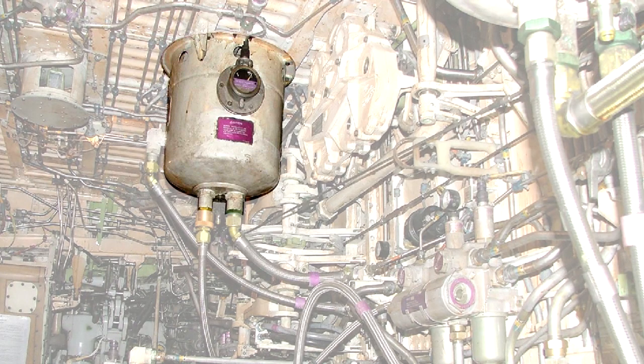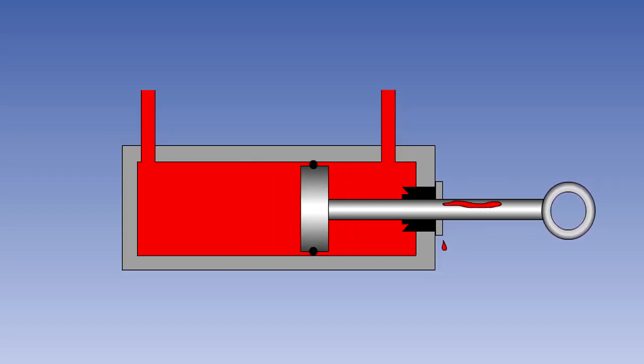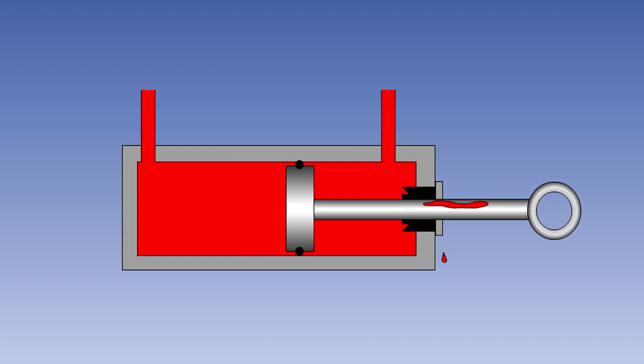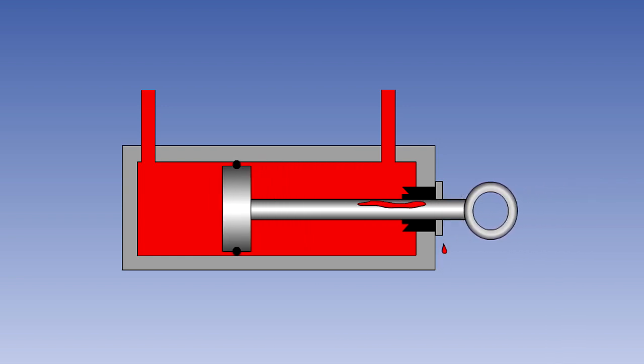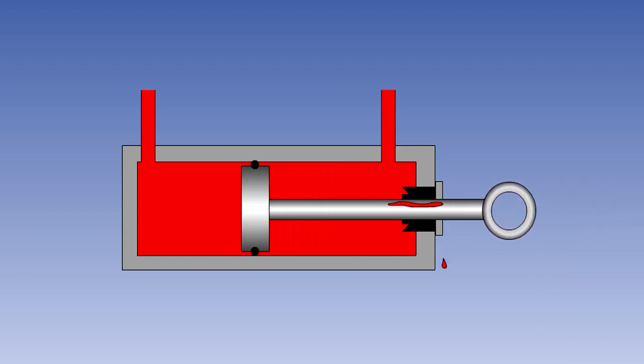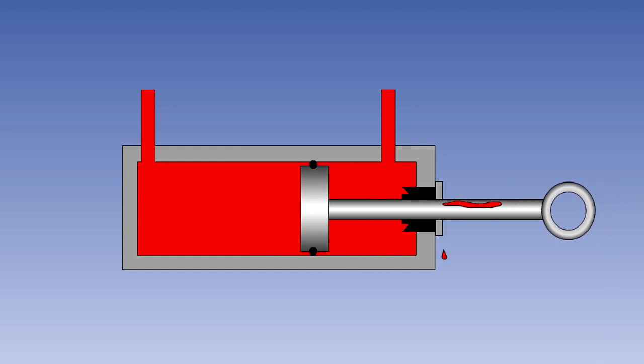The first component we are going to discuss is the reservoir. You may think that in a sealed, leak-free system, a reservoir would not be necessary. However, that is not true. Firstly, no system can ever be leak-free. In fact, we have already said that a very small amount of fluid is allowed to leak across the seals of actuators in order to lubricate them.